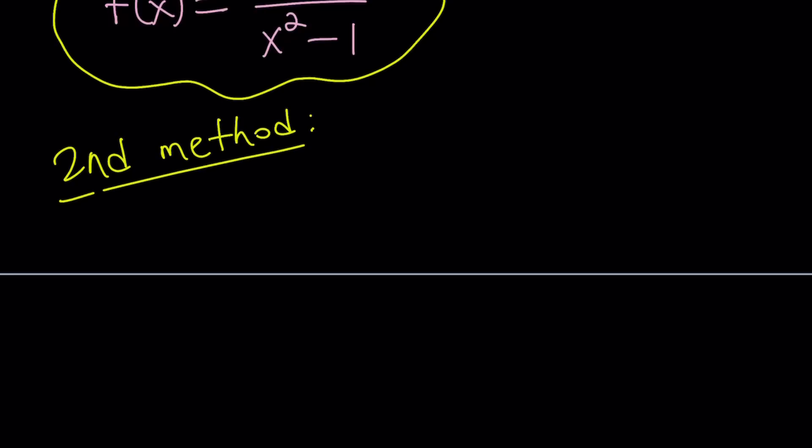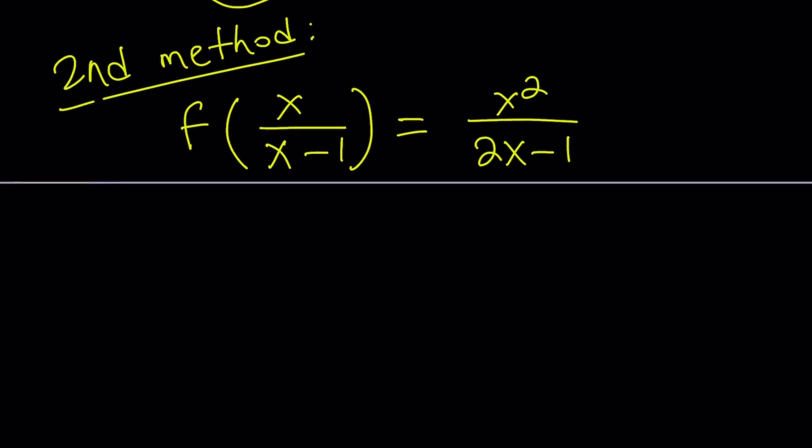Because, the first method is kind of like, pretty much works all the time. You know, you're basically replacing the whole thing inside the parentheses with another variable. Obviously, that's going to give you f of t, which you can then turn into f of x. So, that's pretty standard. The second method kind of looks at patterns, which is, I think, more meaningful in my opinion.